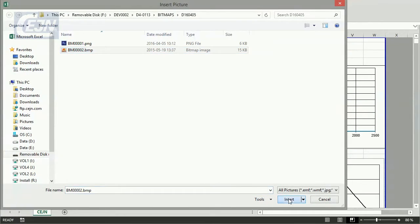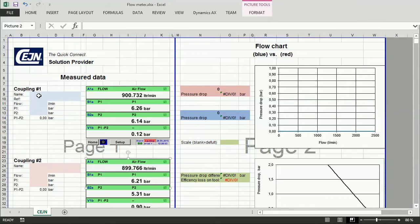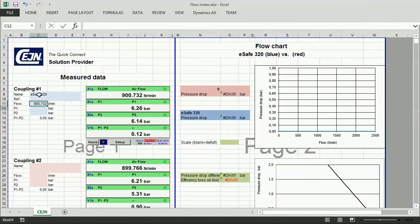Once you've inserted the pictures, you need to key in the name of the coupling. In this case, ESAFE 320. Then key in the flow and the P1 and P2 figures. The Excel file will calculate the difference between the P1 and P2 results. Do the same with the competitor's coupling. Flow P1 and P2.